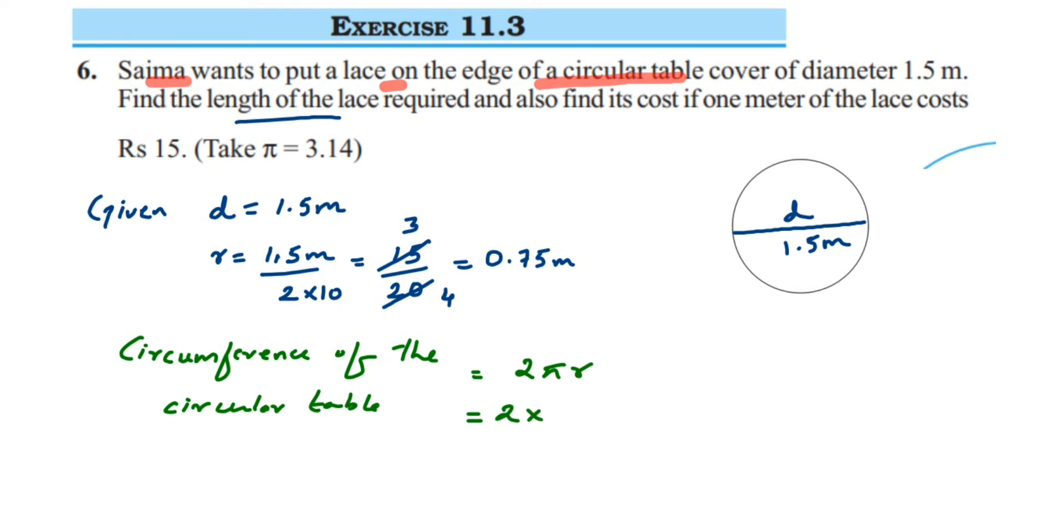So this is equal to 2 into π value. They have given in the question to take 3.14. They have mentioned - if they have not mentioned, you can go with any value. You can take either 22/7 or 3.14. So this is 3.14 multiplied by the radius. The radius here is nothing but we calculated as 0.75 meter.